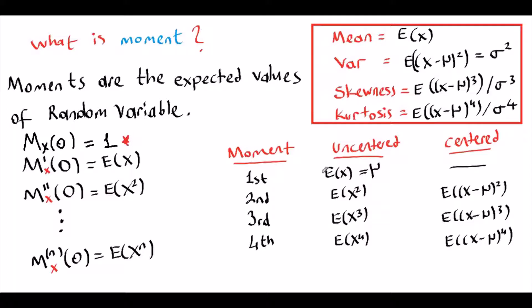Another important thing is that the moment generating function M_X of t at zero always equals one. We have four important moments: the first moment is our expectation, the second moment is about the variance, the third moment is about the asymmetry of the distribution, and the fourth moment is about how heavy its tails are. The third moment is used to create the skewness and the fourth moment is used to create the kurtosis, which comes from the Greek word meaning curvature.